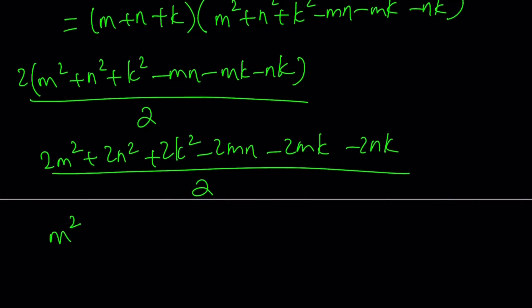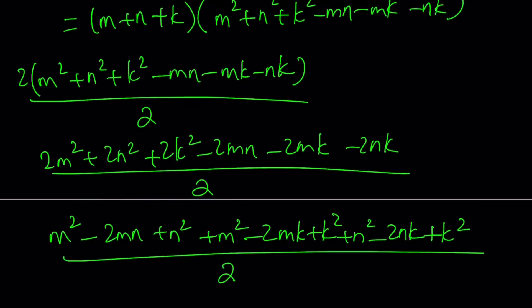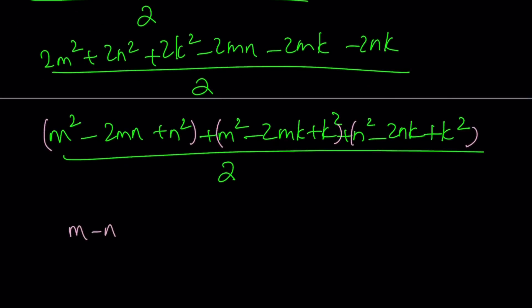Notice that this can be split up into three different expressions. M squared minus 2MN plus N squared plus M squared minus 2MK plus K squared plus N squared minus 2NK plus K squared. And all of that is divided by 2. And here, notice that these are perfect squares. We can go ahead and write this as M minus N quantity squared, M minus K quantity squared, and N minus K quantity squared. And all of that is divided by 2. Notice that no square is negative.